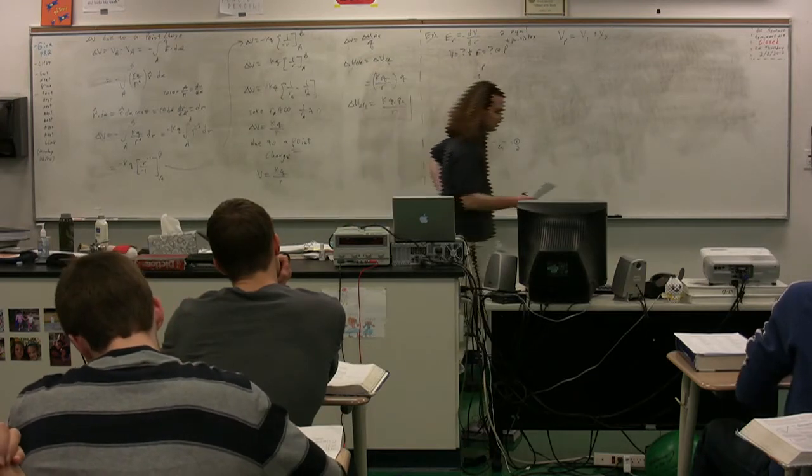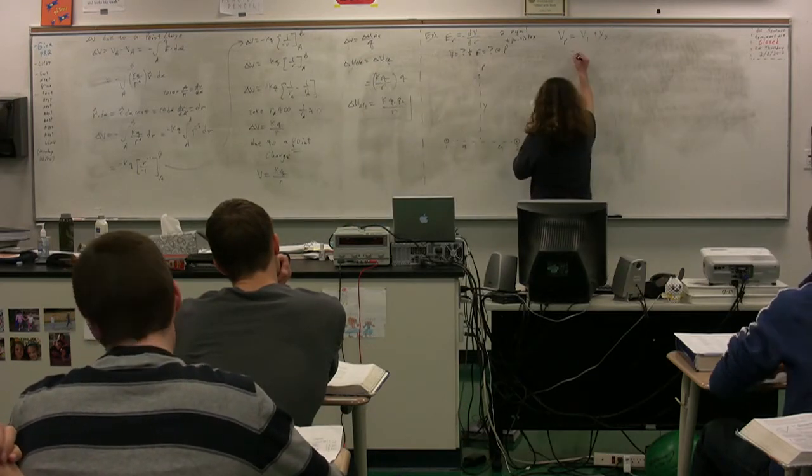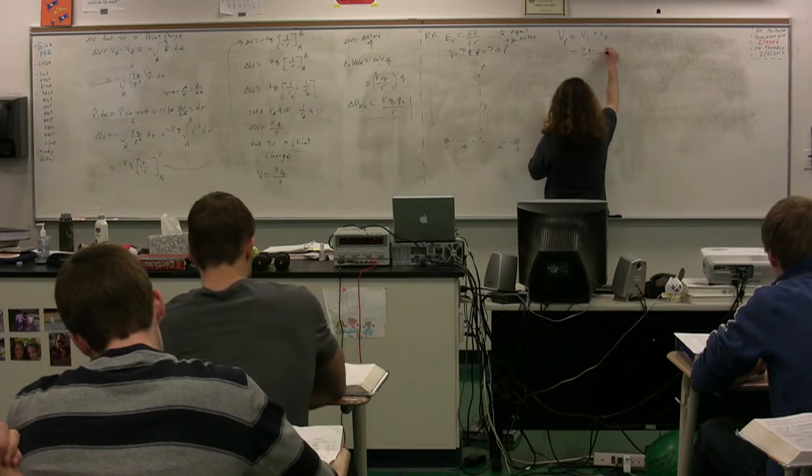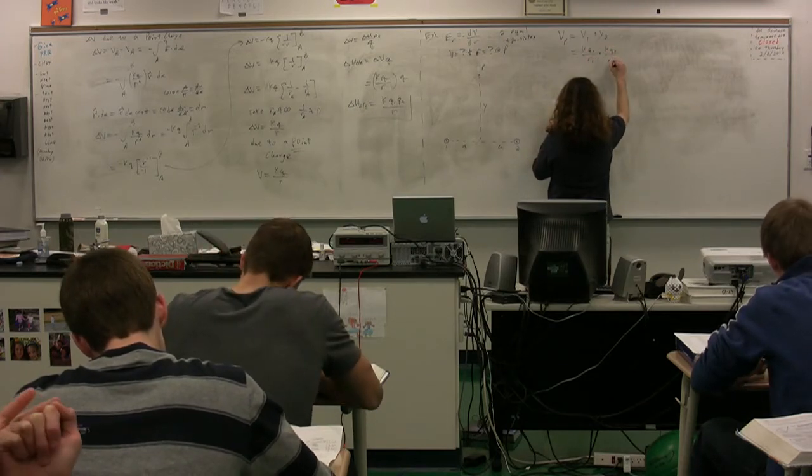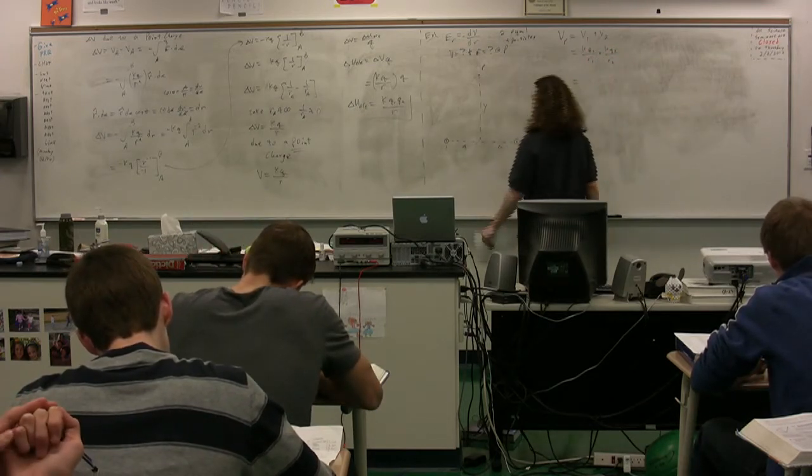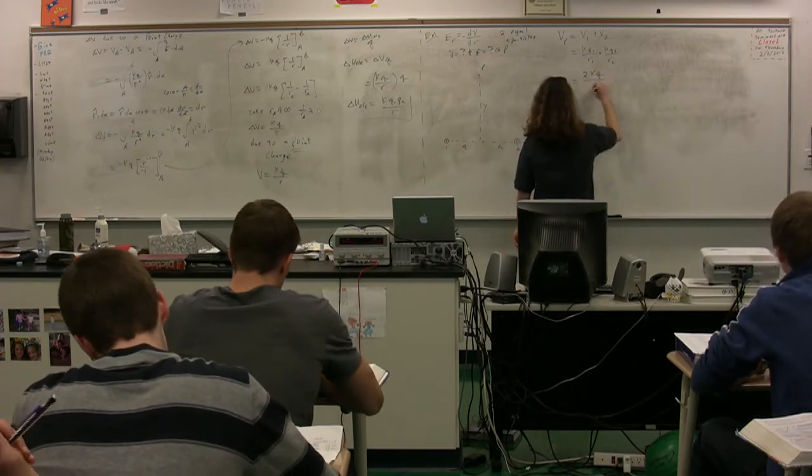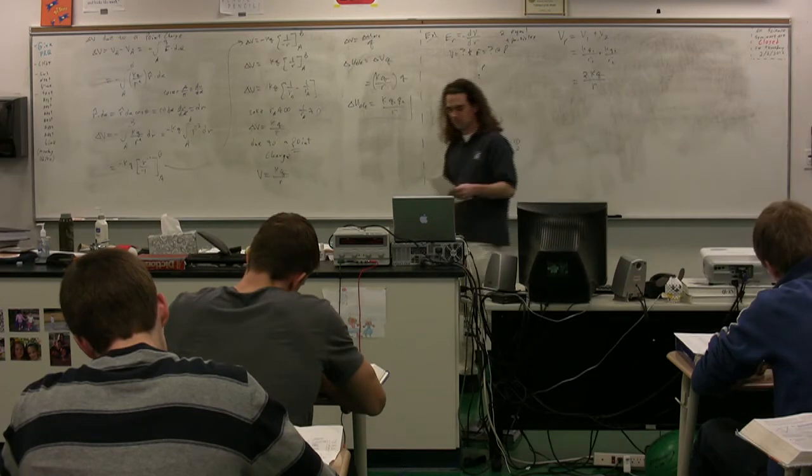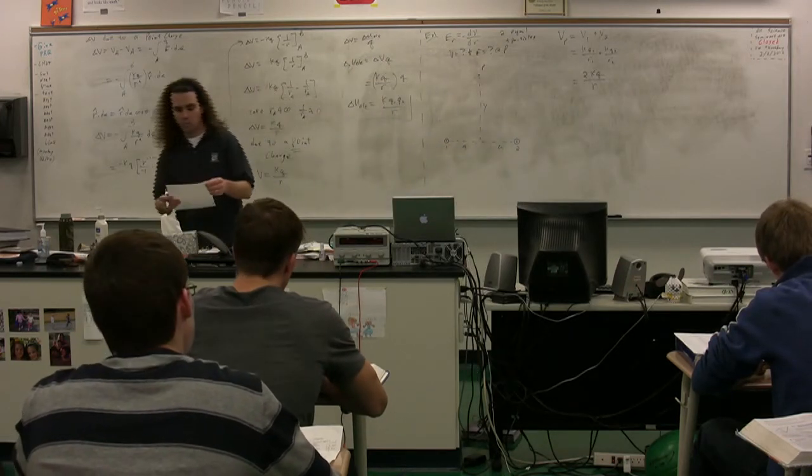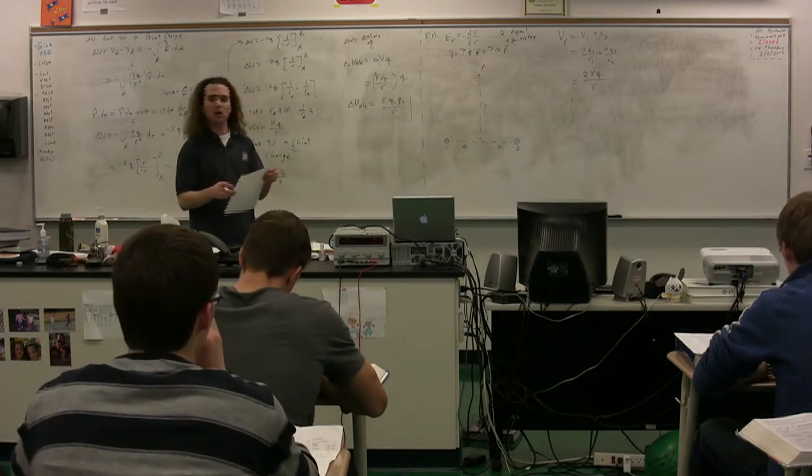So, this is simply equal to KQ1 over R1 plus KQ2 over R2. Well, the Q's and the R's are the same, so this is 2KQ over R. What is R?